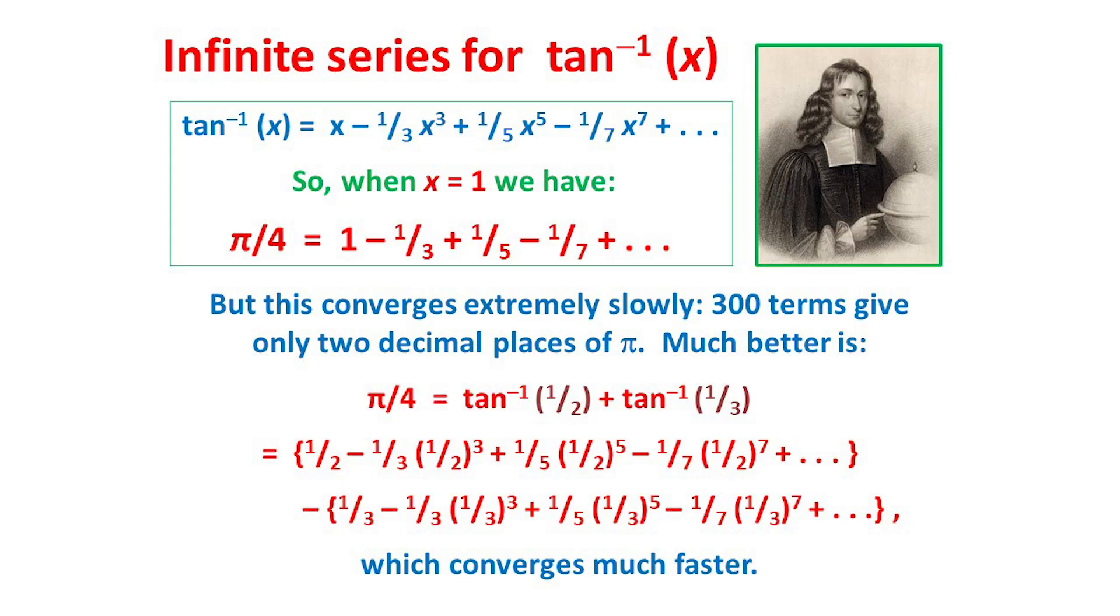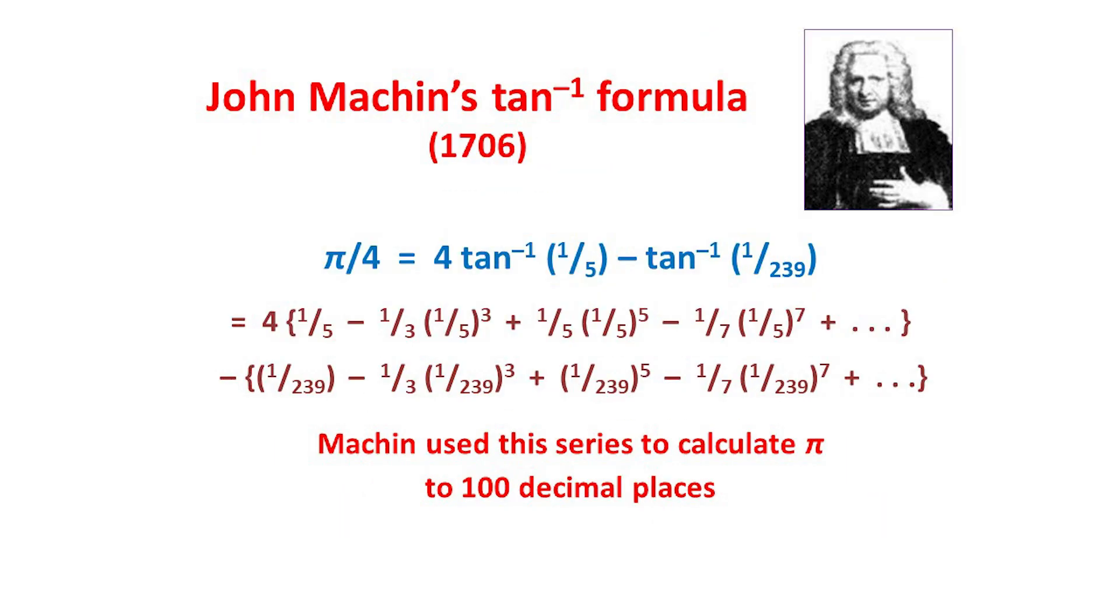Are there any other tan⁻¹ results where the series converge even faster? In 1706, the Englishman John Machin used the addition formula several times over in order to prove the result shown here. And he then wrote out the 2 tan⁻¹ x series below. Now these series converge rapidly because of the powers of 5 and 239 in the denominators.